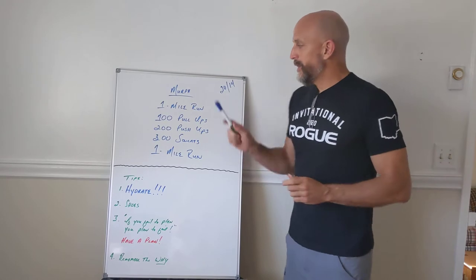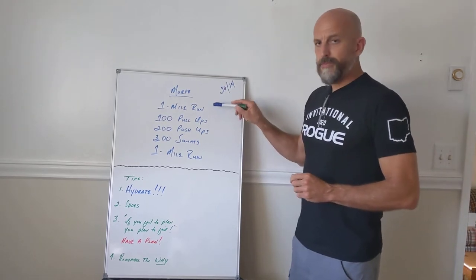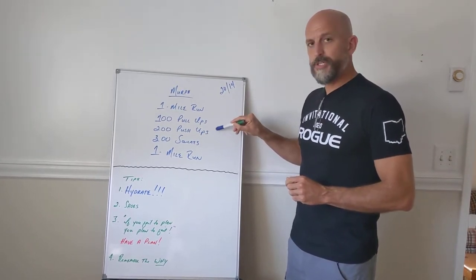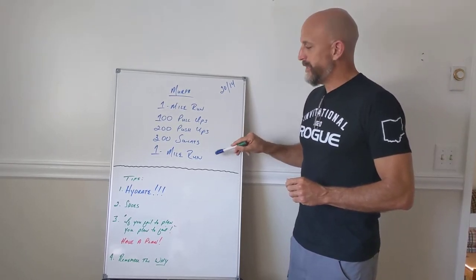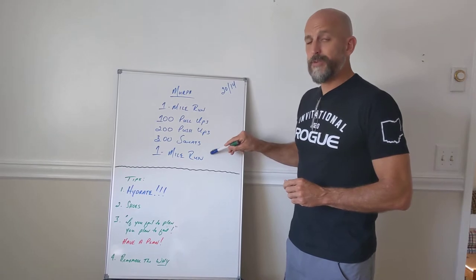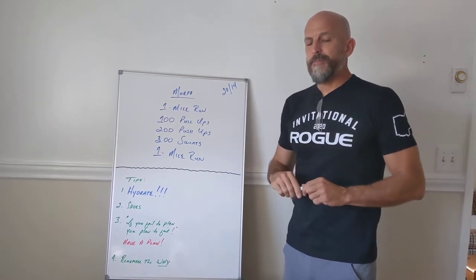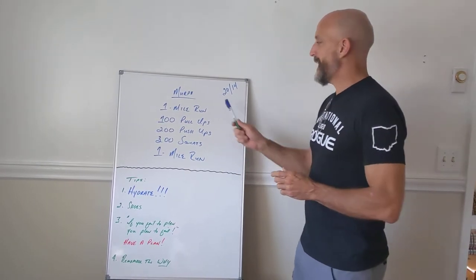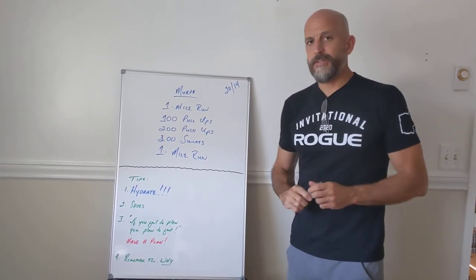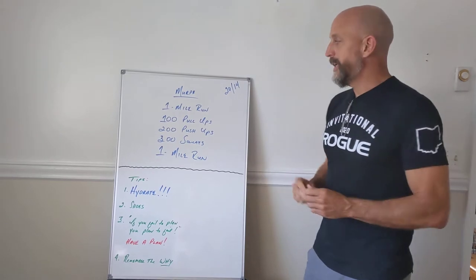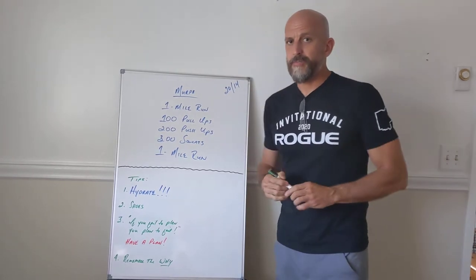Murph is a one-mile run followed by a hundred pull-ups, 200 push-ups, 300 squats, and then you bookend it with another one-mile run. And if that weren't enough, they ask you to wear a 20-pound vest if you're a male and a 14-pound vest if you are a female. That is the RX version of Murph.